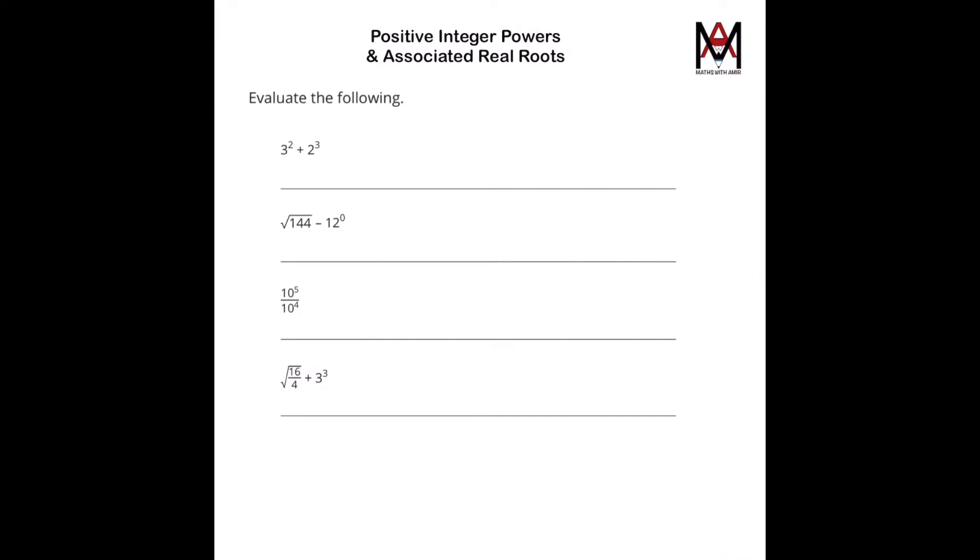Right, before we can do any of these questions, a positive integer power is, for example, the 5 as a power of 2, because this is a positive whole number, so it's a positive integer, that comes as a power of 2.